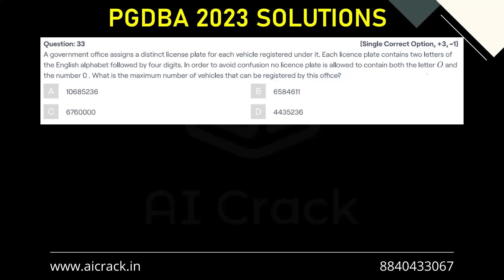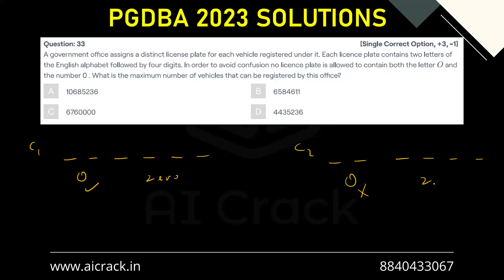Now since both letter O and number zero cannot appear together in the number plate, we can have two cases. Case one is when O is allowed but zero is not. Case two is when O is not allowed but zero is allowed. These two possibilities are there — they cannot be together.